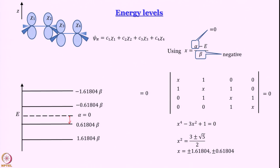Because after all, the expression does have alpha minus E kind of thing. And then this is 1.61804. Even though I said it several times, please remember plus 1.61804 beta actually means a negative quantity because beta is negative, that is why it is lower. Now, these are the energy levels.